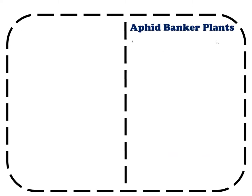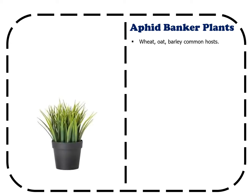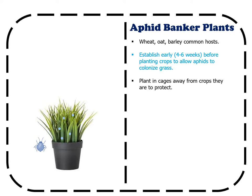Aphid Banker Plants: Wheat, oat, or barley are common host plants used in this system. It is important to establish this system early in the season, about four to six weeks before crops are planted. This allows the host bird cherry oat aphids to establish on the grass. The pots with the aphids should be grown in cages away from the crops they will protect — this is especially important as the season progresses, as the parasitic wasps are very efficient at finding their hosts and care needs to be taken to avoid contamination of the host aphid colony.